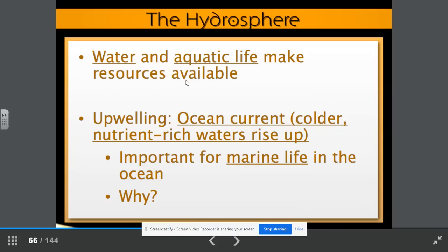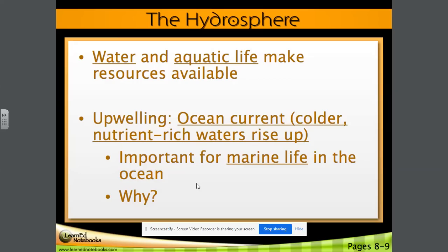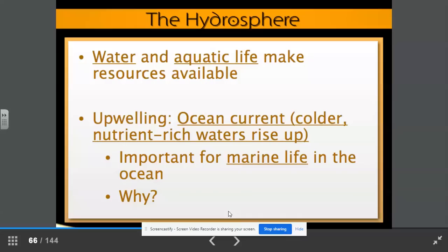Water and aquatic life make resources available. Upwelling occurs when an ocean current, for example, colder nutrient-rich waters rise up. This is extremely important for marine life in the ocean. Do you remember why? Many ocean fish, marine mammals will actually migrate to off the coast of New England in the summer off of the east coast in the Atlantic because of the amount of upwelling. Those offshore breezes, the breeze is coming off the shore, blowing that water farther out to see causes the colder nutrient-rich water to upwell from the bottom and it provides a perfect smorgasbord of feeding for a lot of different animals.